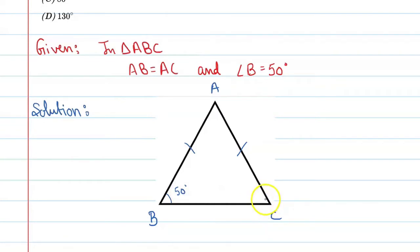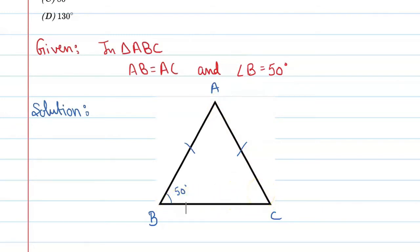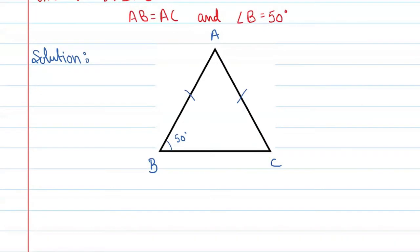Here we have a property of triangles: angles opposite to equal sides are equal. Since AB and AC are equal, the angle opposite to AB is C, and the angle opposite to AC is B. Therefore, angle B and angle C are equal.